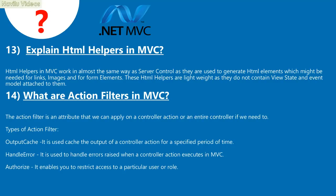Question 14: What are action filters in MVC? An action filter is an attribute that can be applied on a controller action or an entire controller. Types of action filters: Output Cache — used to cache the output of a controller action for a specified period; HandleError — used to handle errors raised when a controller action executes; Authorize — enables restriction of access to a particular user or role.